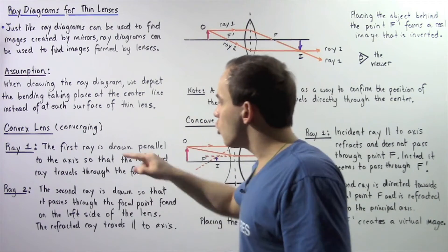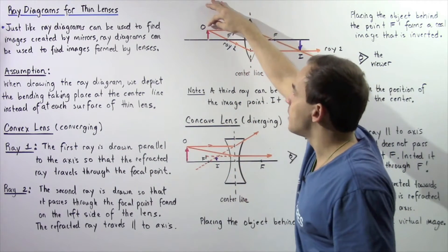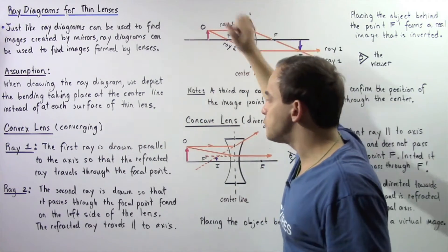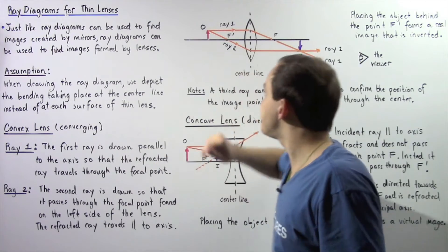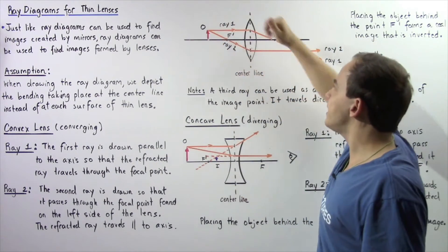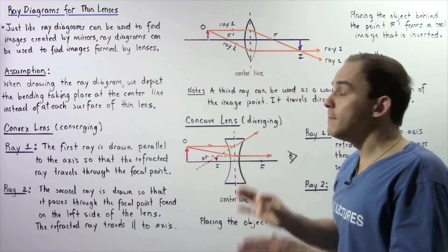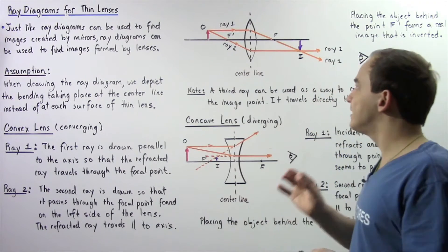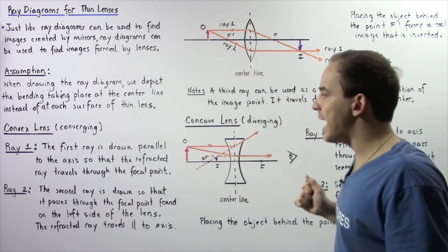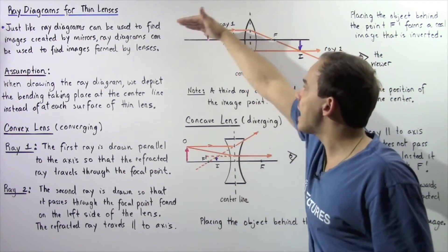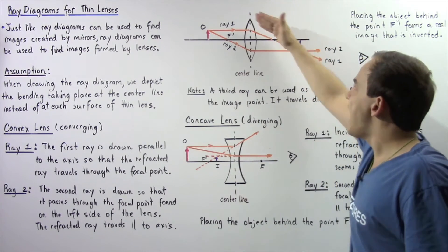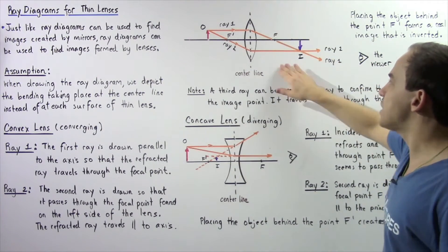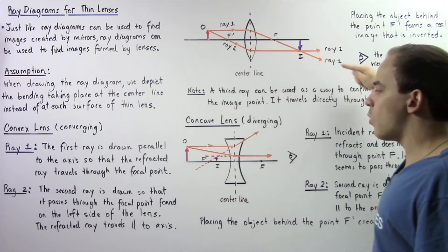Let's begin drawing our rays. Ray number one begins at the tip of our object, known as the object point. The first ray begins at the object point and is drawn parallel with respect to our principal axis. Eventually, when it hits the center line, it will refract because our lens is made from glass or plastic which has a different index of refraction than air. Because the ray was initially parallel to the axis, it will bend and go directly through focal point F on the right side of our lens.